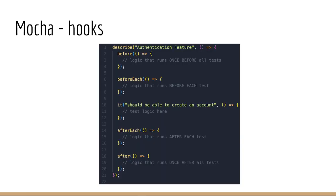The before hook runs only one time before any tests in the test suite. The before each hook runs before each test in the test suite. The after hook runs only one time after all the tests in the suite are run. The after each hook runs after each test in the test suite. With hooks, we can ensure that our tests run in a consistent and predictable environment and that any resources created during the tests are properly cleaned up afterwards.